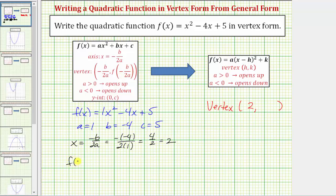So f of two is equal to two squared minus four times two plus five. Simplifying, we have four minus eight plus five, which equals positive one.